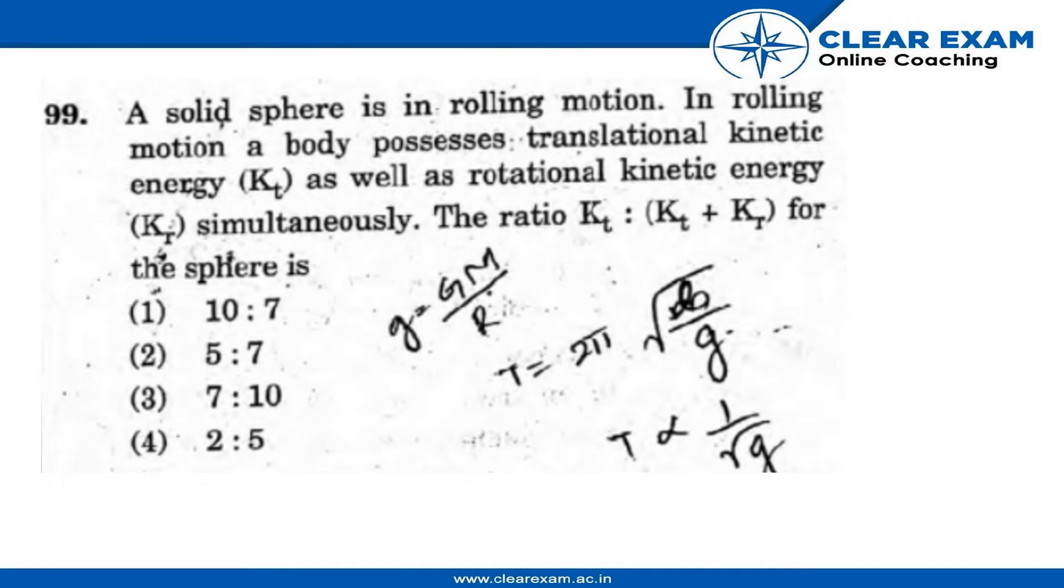A solid sphere is in rolling motion. In rolling motion, the body possesses translational kinetic energy (Kt) as well as rotational kinetic energy (Kr) simultaneously. We have to find out the ratio of Kt to the sum of Kt plus Kr for the sphere.